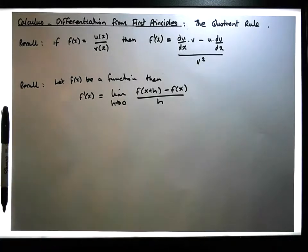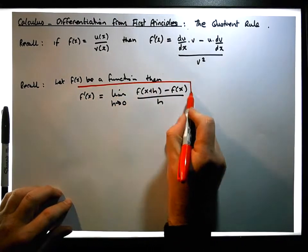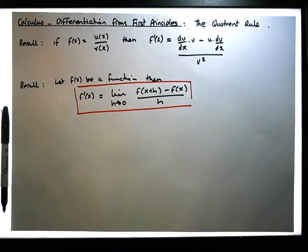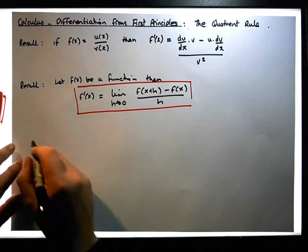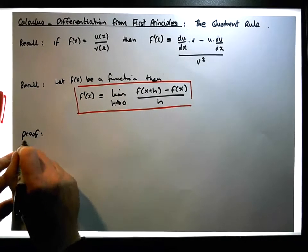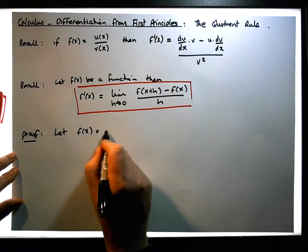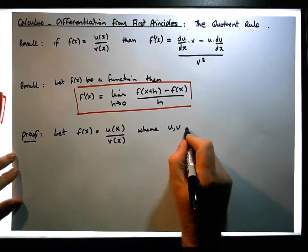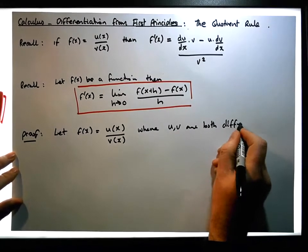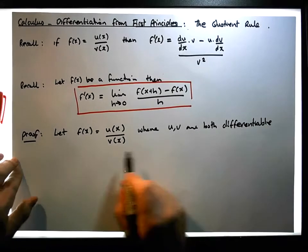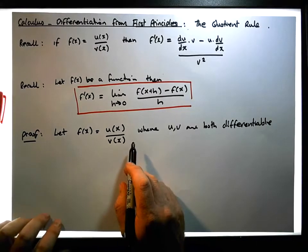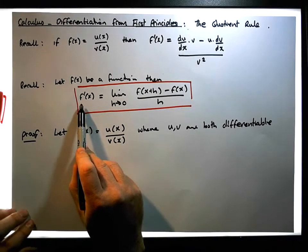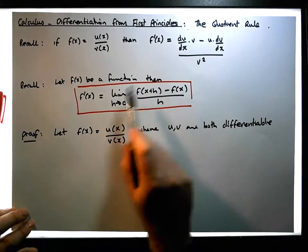This is the definition of what a derivative is, and we want to use this fact to show that the derivative of a quotient equals that particular expression. So here's our proof: let f of x be equal to u of x over v of x, where u and v are both differentiable. The consequence of them being differentiable is that they're continuous on a particular interval.